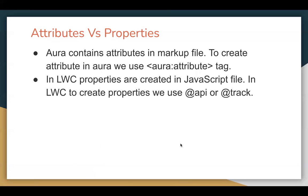Now if we compare attributes: in a Lightning Aura component, for variable creation we used attributes. In Lightning Web Component, you have to use them in the form of properties. If you want to create a variable in a Lightning Aura component, you write aura:attribute in the markup file. But in LWC, properties are created in the JavaScript file.